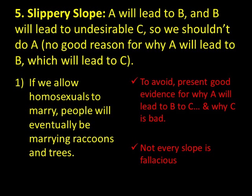The fifth fallacy is the slippery slope fallacy. This is when we argue that A will cause B, and B will lead to undesirable C, so we shouldn't do A. All slippery slope fallacies present a chain of reasoning where the first step leads to the others, but there's no good justification given for why. Examples: humans will eventually be marrying trees and raccoons if we allow homosexual marriage; or if I loan you a dollar today, you'll eventually ask for ten, then a hundred — so I can't give you this dollar.